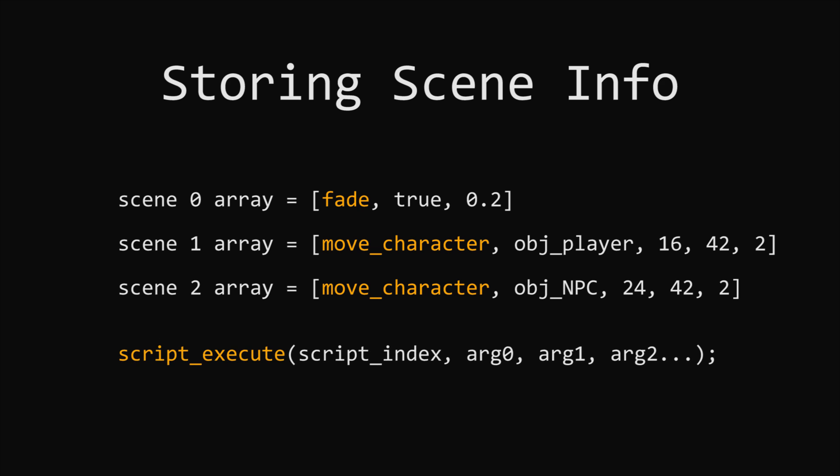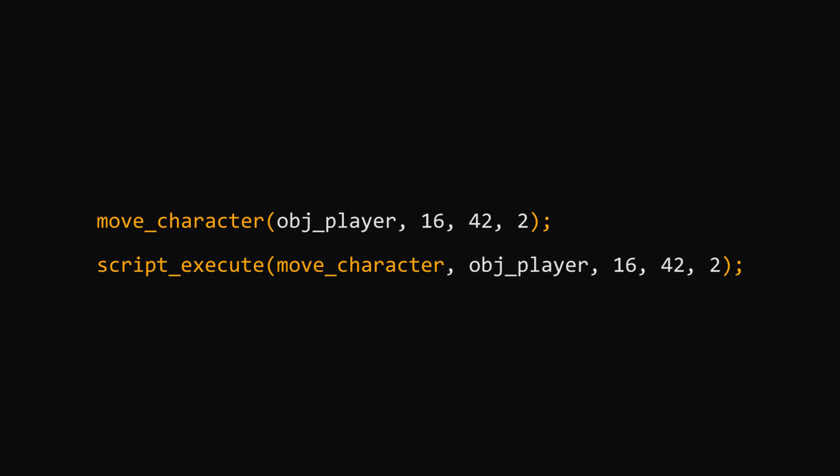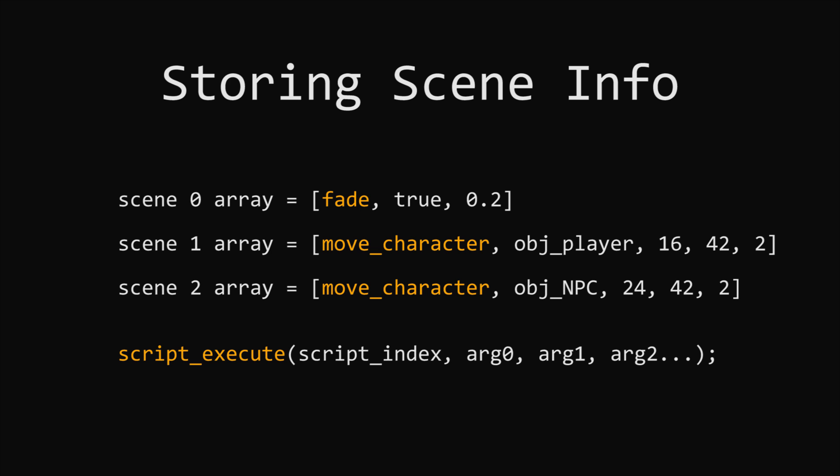The script_execute function takes the index of the script you want to run as its first argument, and then all of the other arguments are the ones you want to input into that script. So writing move_character with object, x, y, and speed is equivalent to writing script_execute(move_character) and then giving it all those arguments. Coming back to our array that stores for each scene the script and then all the arguments, we're going to need to set this out in a way where it can handle any number of arguments.